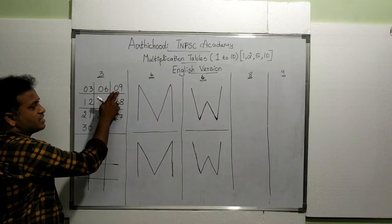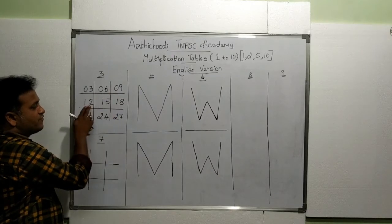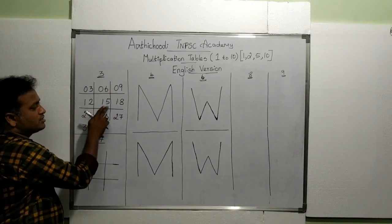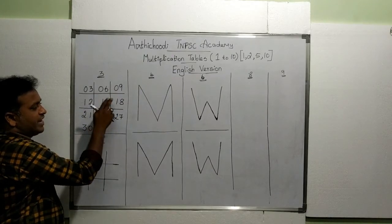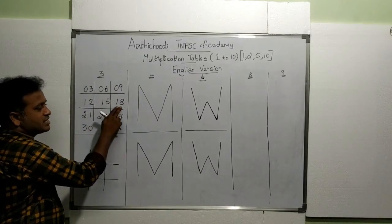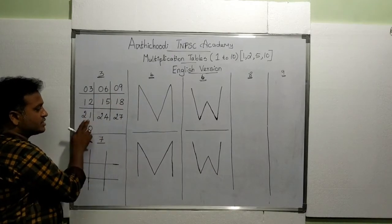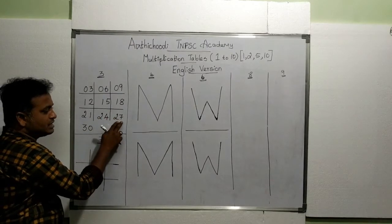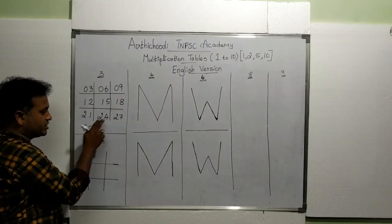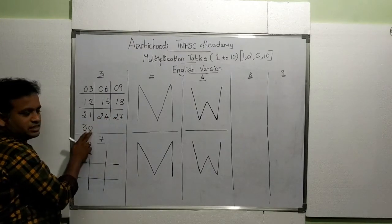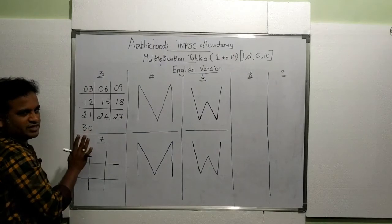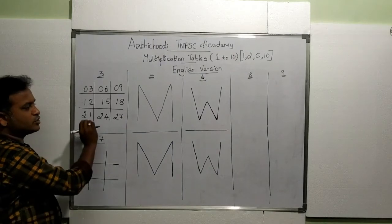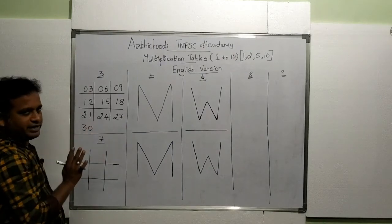Now read it like this: 3 ones are 3, 3 twos are 6, 3 threes are 9, 3 fours are 12, 3 fives are 15, 3 sixes are 18, 3 sevens are 21, 3 eights are 24, 3 nines are 27, 3 tens are 30. That's it — third table completed.